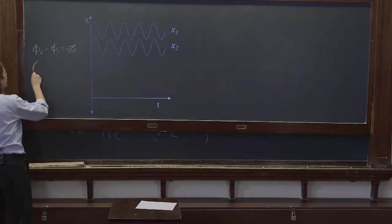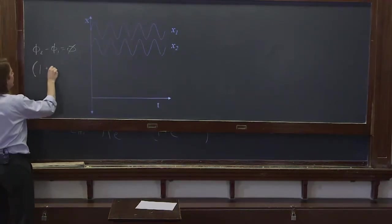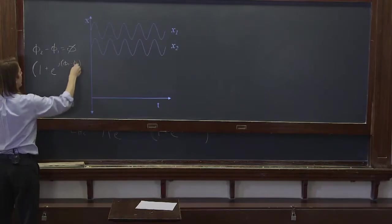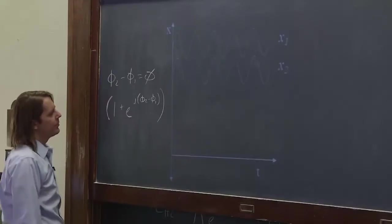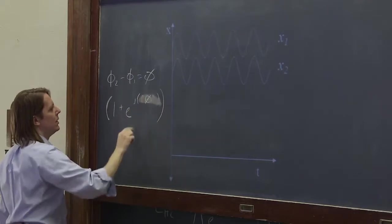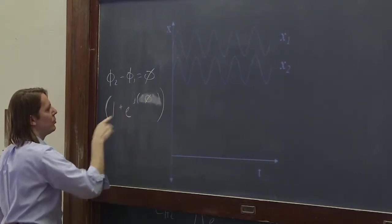So if you think back to that phase factor, it was 1 plus e^(j(φ2-φ1)) was the phase part. Well, if φ2 minus φ1 is 0, e^0 is always 1. And 1 plus 1 is 2.